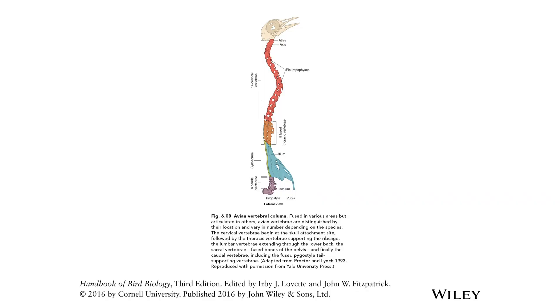The sacrum and the pygostyle — the tail bones of birds — consist of a number of fused bones. Why are they fused? Because that gives them a greater surface area to attach large muscles onto.